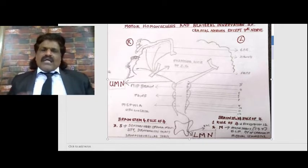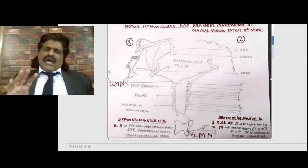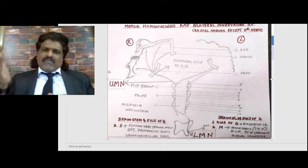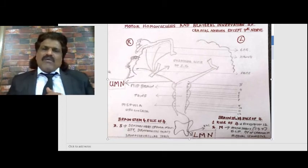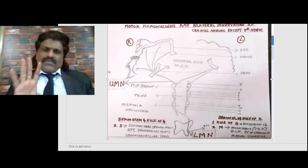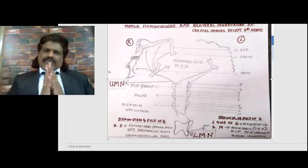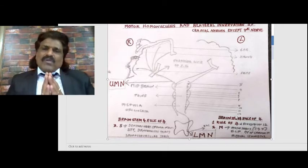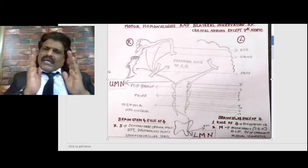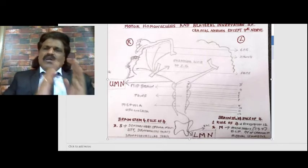According to the rule of four: there are four cranial nerves in the medulla oblongata, four cranial nerves in the pons, and four cranial nerves in the midbrain and above. Above the midbrain: cranial nerves one and two. Midbrain: three and four. Pons: five, six, seven, eight. Medulla oblongata: nine, ten, eleven, twelve.